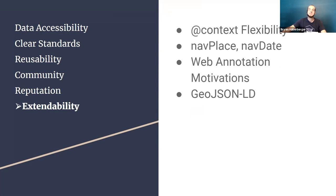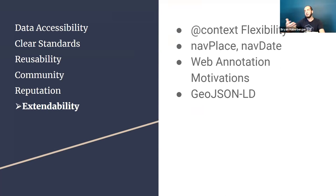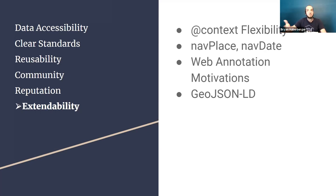On extendability: things like navDate and navPlace add temporal and spatial dimensions to specifications. Web Annotation motivation can be extended — in the geospatial sphere, motivations like 'geolocate', 'georeference', 'warp', or 'thin plate spline' can be defined. GeoJSON-LD was not trivial but possible to bring into IIIF, and GeoJSON also has extensions like GeoJSON-Time and GeoJSON-3D.